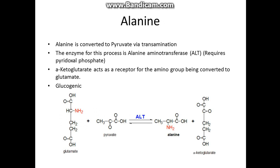I'm going to start with alanine. The enzyme for this is alanine aminotransferase, often abbreviated to ALT. It requires PLP, and basically this reaction can go either way — alanine is either synthesized from pyruvate or catabolized back to pyruvate. It can also arise from glutamate and alpha-ketoglutarate. As mentioned earlier, it's glucogenic because it produces pyruvate. The amino group transfers to alpha-ketoglutarate to form glutamate, or alanine can be synthesized by taking the amine from glutamate and attaching it to pyruvate.